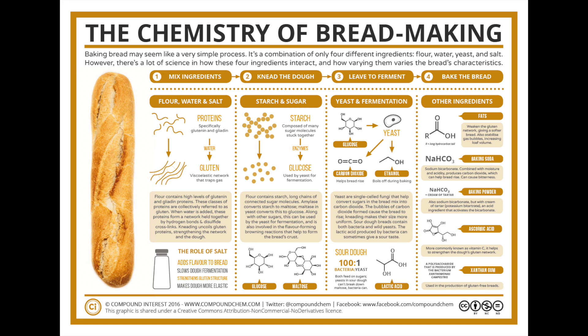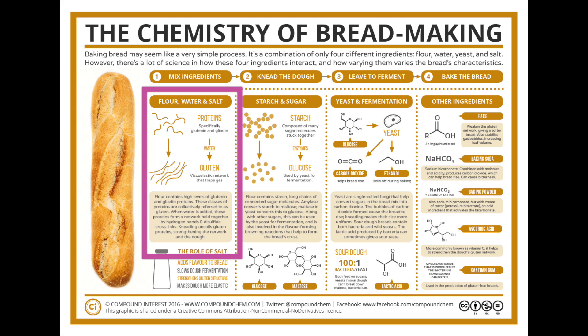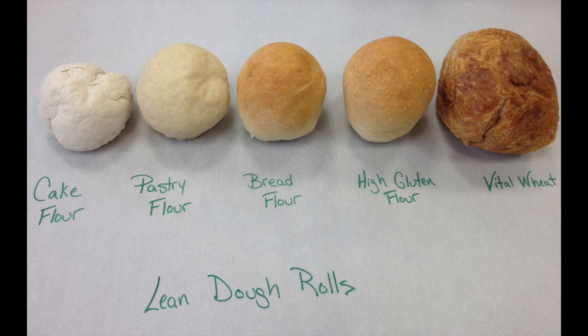We're going to start out by talking about what we're trying to substitute for. In normal full-carb baking, the most important ingredients are usually the gluten and the starch that come in wheat flour. These are the roles that they play in baking. To start off with the gluten, this is a type of protein in wheat flour. Gluten is responsible for the majority of the structure in bread baking or any baking that doesn't have eggs in it. And even baking that does use eggs, gluten is still super important.